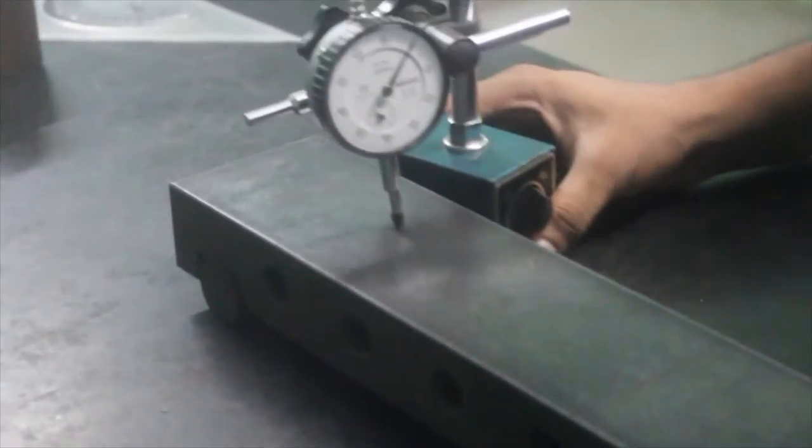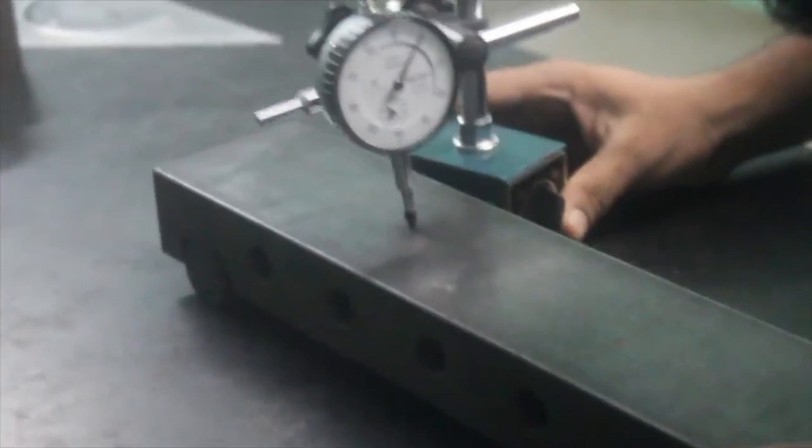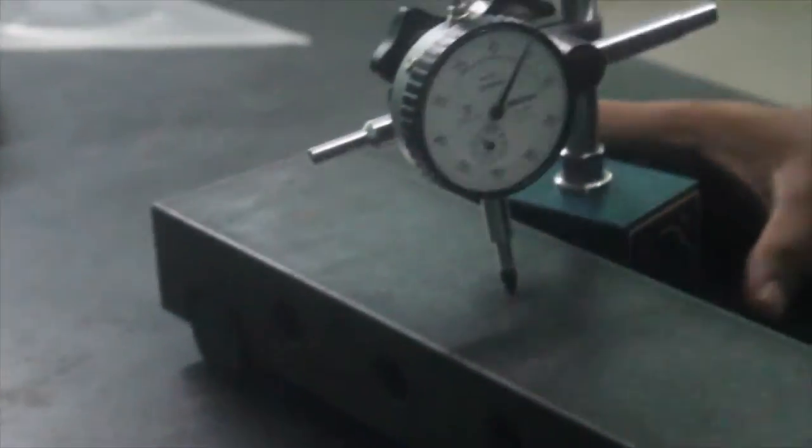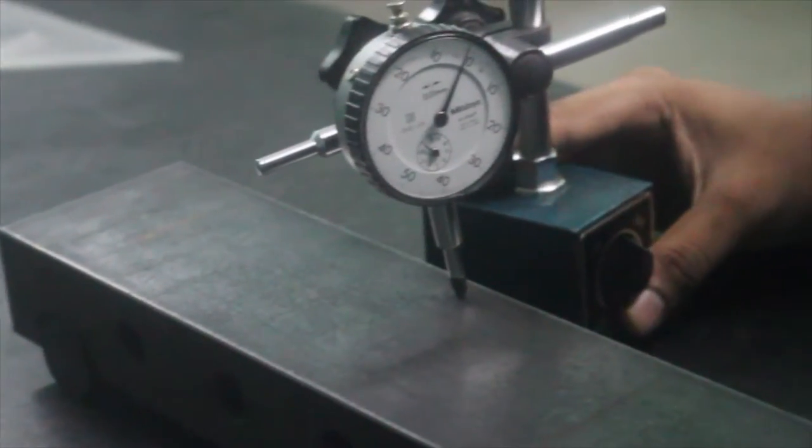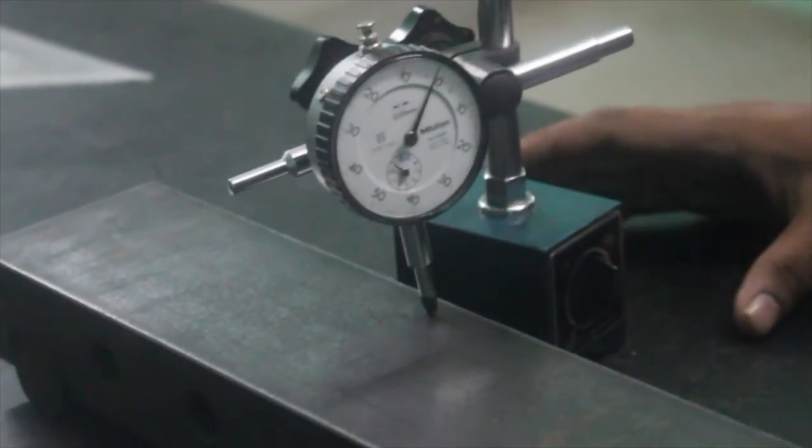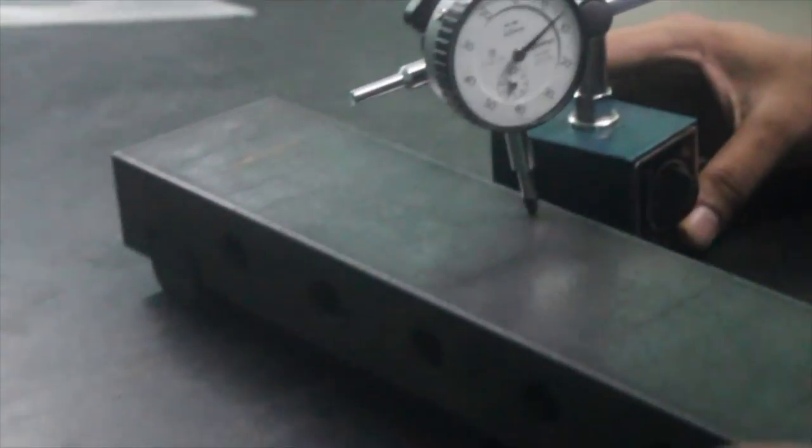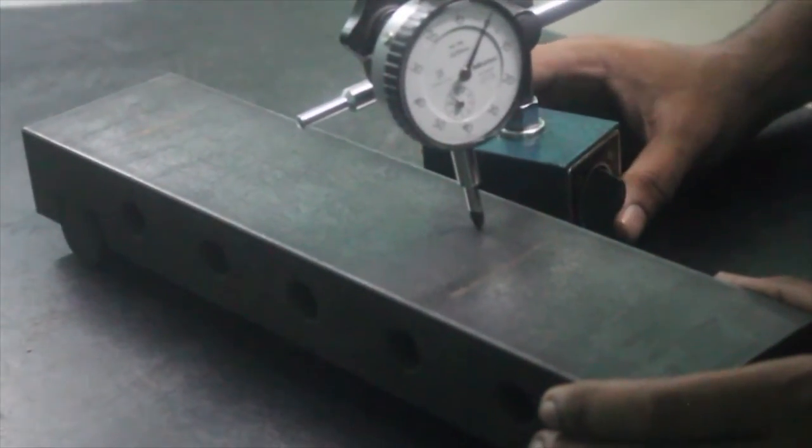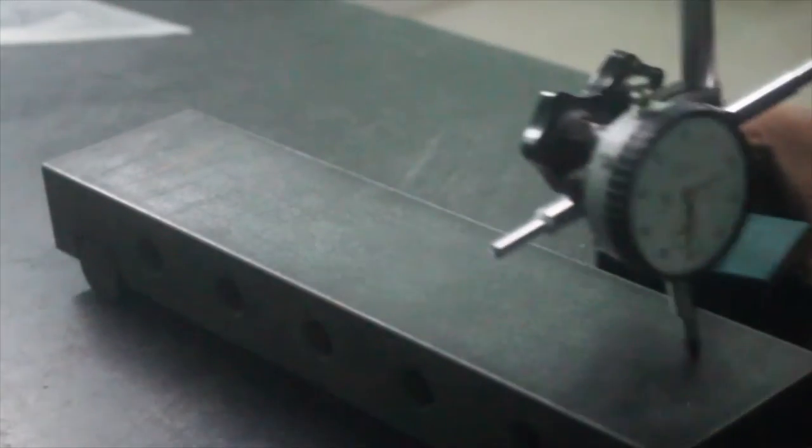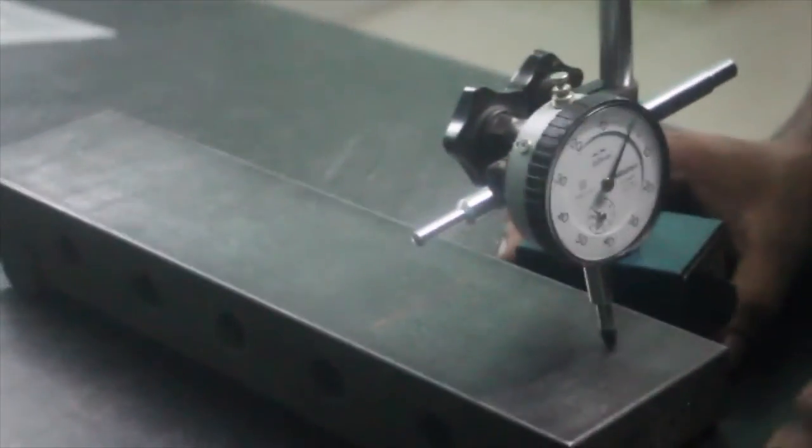At the second point, again we have negative 0.01. Third point, negative 0.02. Fourth point, again negative 0.01. And the last point, it is zero.